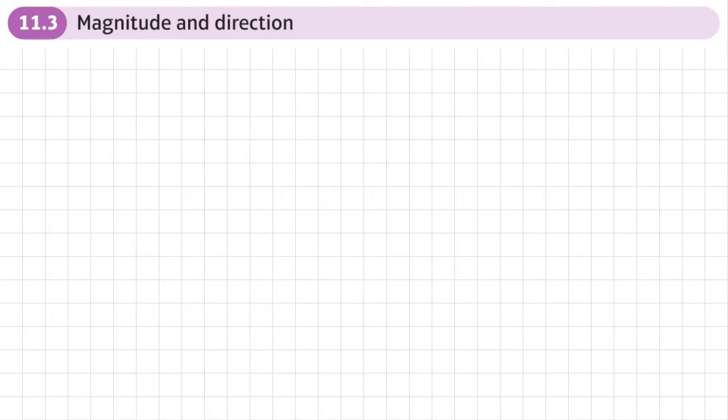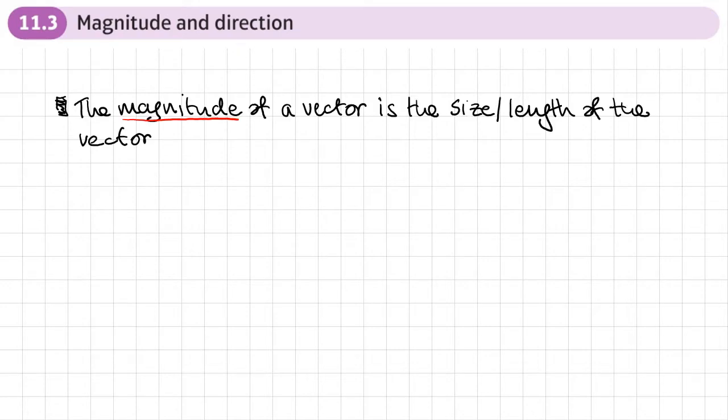This is the third section of chapter 11 on vectors, and this section is on magnitude and direction. So the first thing is, what do we mean by magnitude?